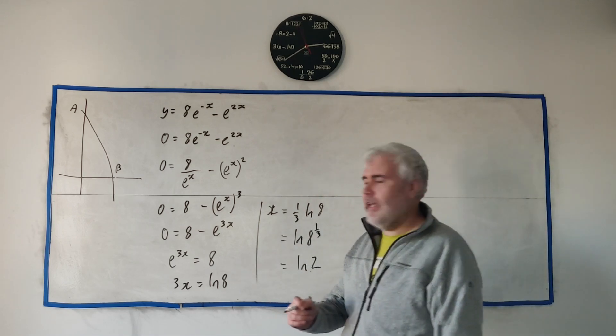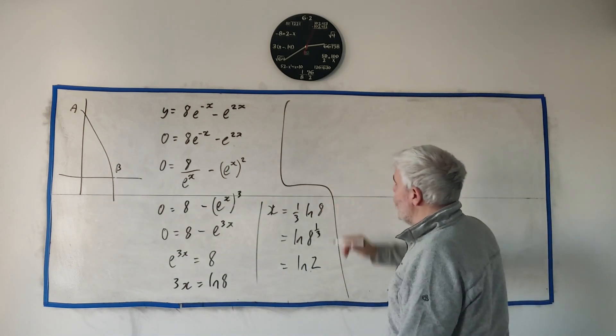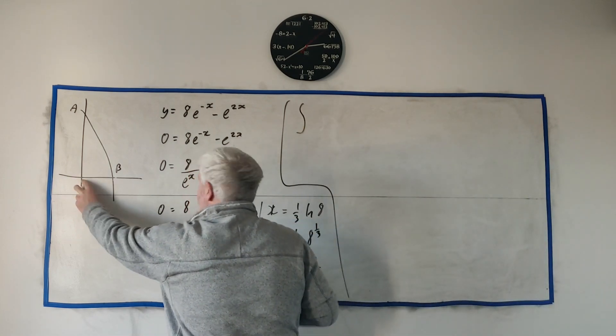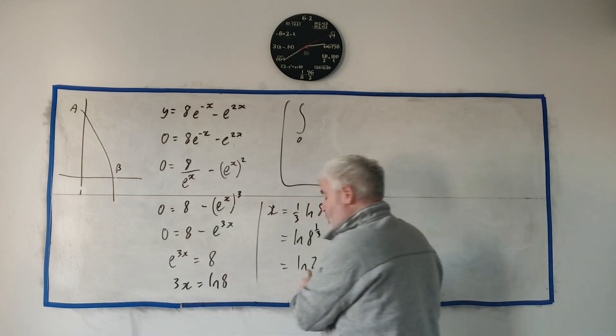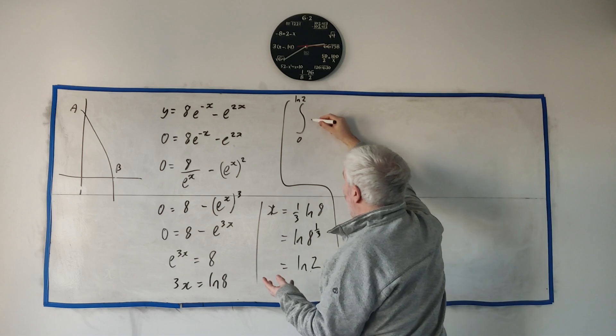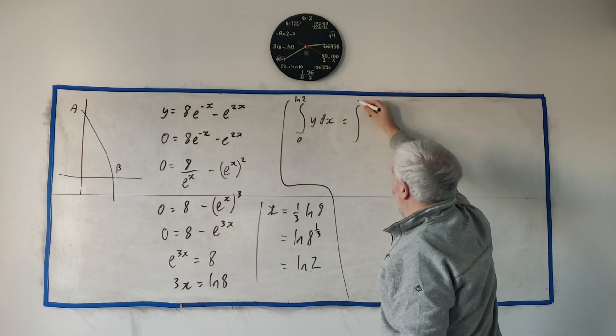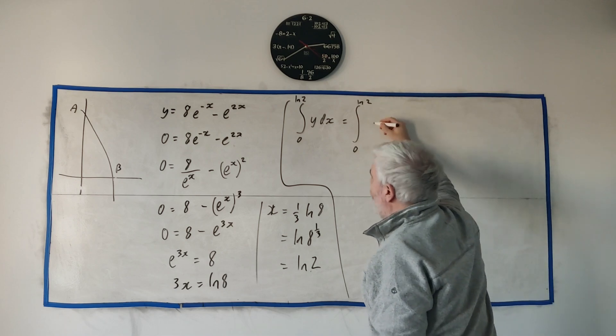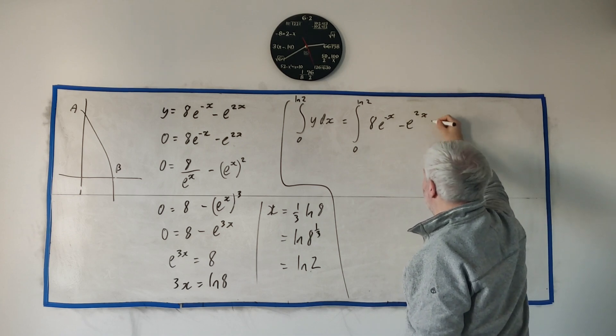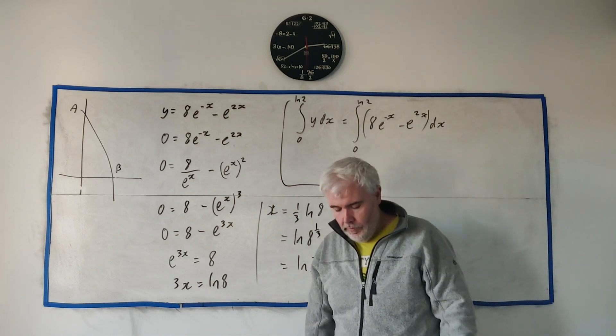The next part they say to find the shaded region in here, so you should be thinking integration. That's the integral between the leftmost part which is 0 and the rightmost part which we've just found is natural log 2, and that's of y dx. The integral from 0 to natural log 2 of 8 e to the minus x minus e to the 2x dx. So that will be the area we're looking for.